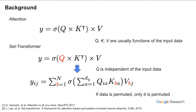In the attention paper, the query, key, and value components are functions of the input data x. Permuting x will also affect these three matrices, so the original form of attention is not permutation invariant. In set transformers, the authors made the query matrix independent of the input. Now permuting the input will only affect the k and v matrices. In the matrix multiplication formula, this only affects the ordering of the indices, and hence the output y becomes permutation invariant.